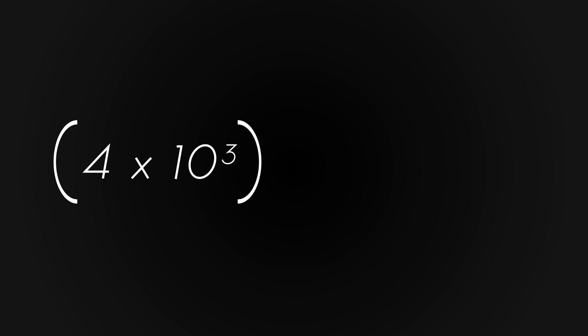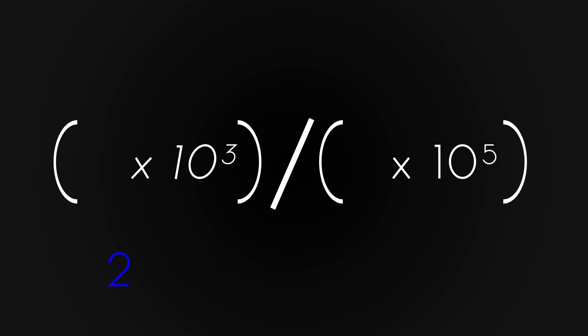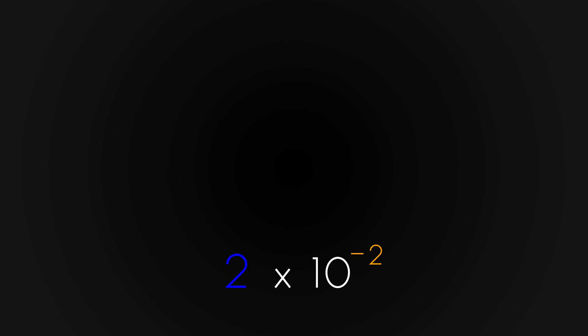To divide two numbers, you use a very similar strategy. In this case, we'll divide 4 times 10 to the 3rd by 2 times 10 to the 5th. You start by dividing the first two numbers: 4 divided by 2 is 2, so you bring down a 2. Next, you subtract the exponents: 3 minus 5 is negative 2, so you bring down a 10 to the negative 2.